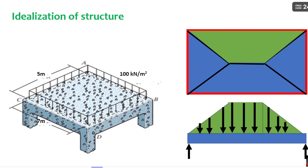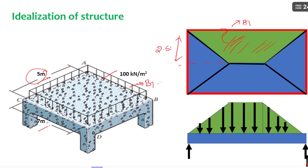For a rectangular slab — dimensions 5 meters by 7 meters — the load distribution takes the form of a trapezoid. Considering beam B1, the 100 kN/m² pressure is transferred as a trapezoidal load onto that beam. The short dimension is 5 meters, so the dispersion width is 2.5 meters. The maximum ordinate of the trapezoid is 100 × 2.5 = 250 kN/m. In this way the two-way slab system transfers loads to beams in trapezoidal form.